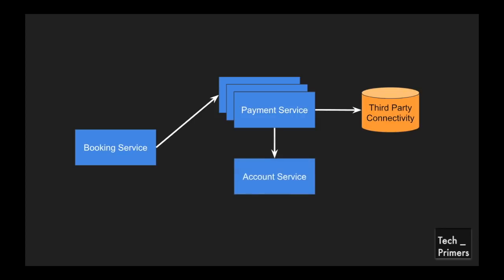This payment service also talks with an account service. The booking service should also be able to get data from the account service, which holds user info such as credit card information or order information. The booking service talks with the payment service and the account service, and the payment service again talks with the account service. Imagine these are deployed in containers or in a cloud environment — they are bound to change over a period of time.